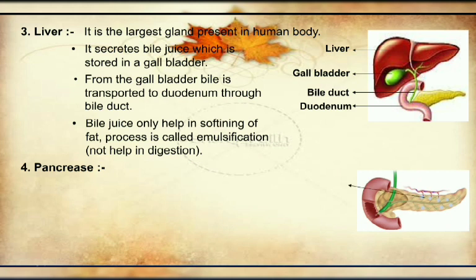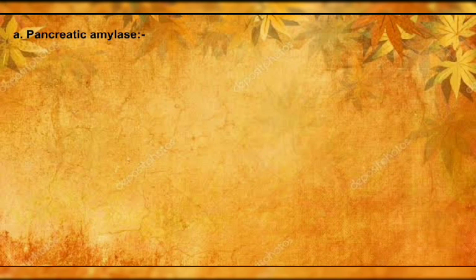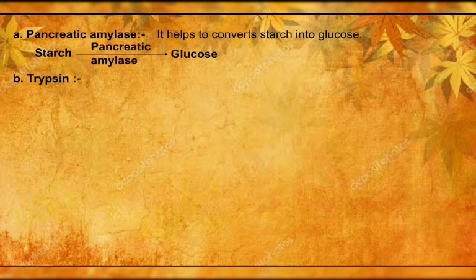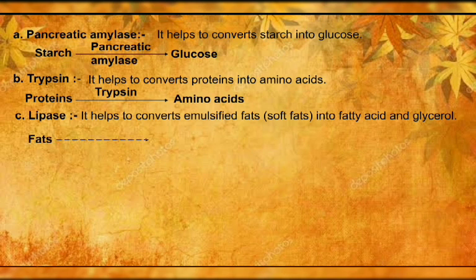The pancreas is a leaf-like or triangular structure present just below the stomach. It secretes pancreatic juice into the duodenum. Pancreatic juice contains different enzymes. Number one is pancreatic amylase — it helps to convert starch or sugar into glucose. Next is trypsin — one question always asked is the difference between pepsin and trypsin: pepsin is in gastric juice and converts protein into peptone and proteose, while trypsin helps convert protein into amino acids. Next is lipase — very important because the fat which was softened by bile (emulsified fat) is acted on by lipase to convert into fatty acids and glycerol.